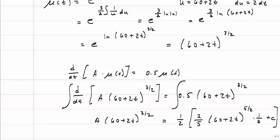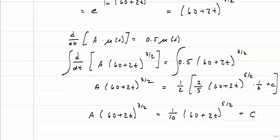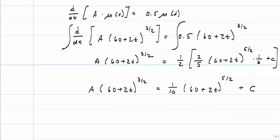I'm rewriting 0.5 as 1 half, so everything's in terms of fractions. And again 1 half times C, I'm just writing a C. And now I'm going to divide both sides so I can solve for A alone.